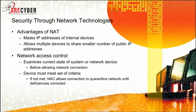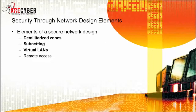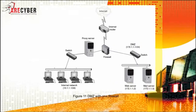Next, we'll talk about Network Access Control, or NAC. It examines the current state of a system or network device before allowing a network connection. The device must meet a set of predefined criteria; if not met, the NAC allows the connection and then quarantines that device until the deficiencies are corrected. Basic elements of secure network design include demilitarized zones or DMZs — a separate network located outside the secure trusted production network where untrusted outside users can access services but not the internal secure network.